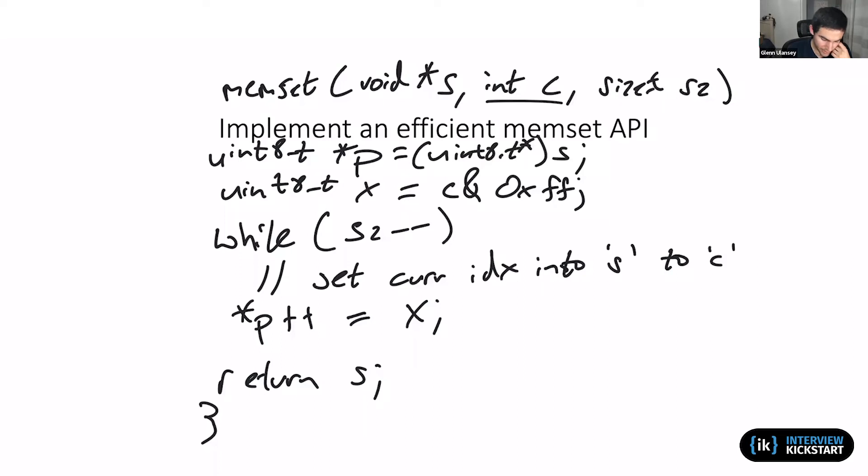I think that's a fantastic idea. So rather than treating this as a byte array, we can treat it as an int32 array. Then rather than having simply one byte for x, we can instead have a 32-bit x where x is effectively this value duplicated four times in a row within x. Then this line rather than writing one byte at a time writes it four bytes at a time.